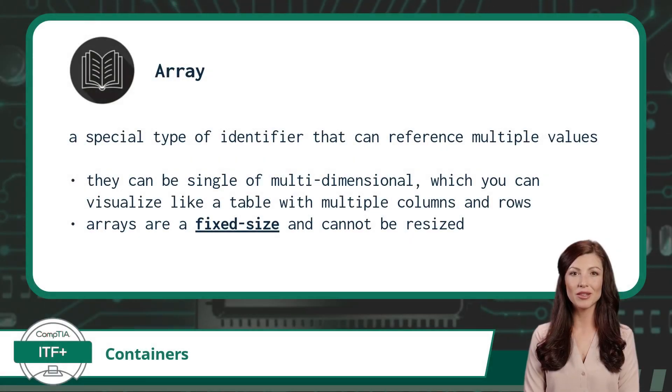Okay, so how does CompTIA define an array? An array is a special type of identifier that can reference multiple values. These values can be arranged in a single or multi-dimensional manner, which you can visualize like a table with multiple columns and rows. Additionally, an array will be of a fixed size, meaning you cannot resize it after it is declared.